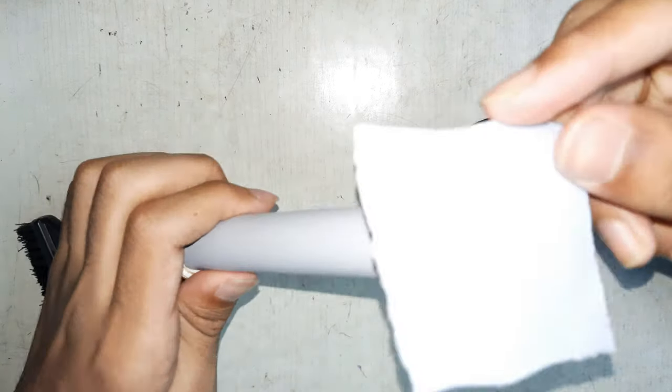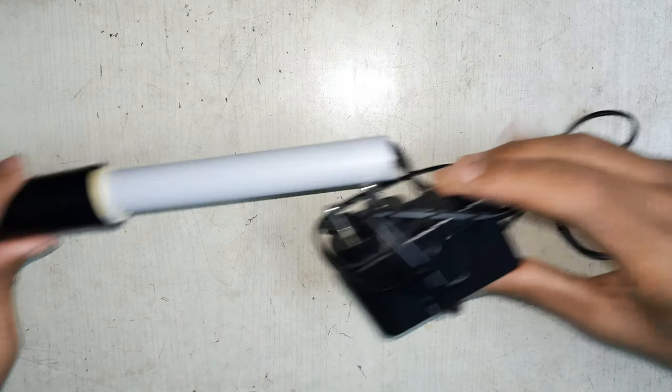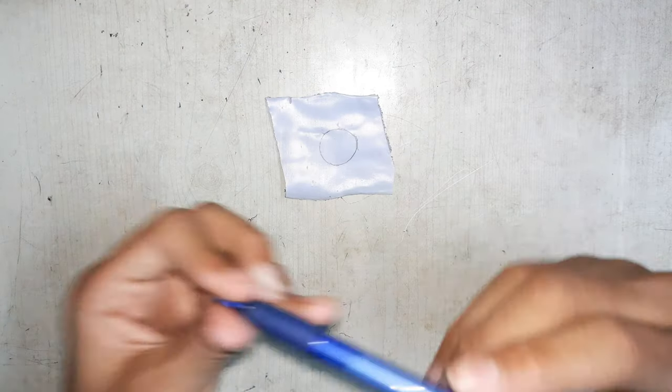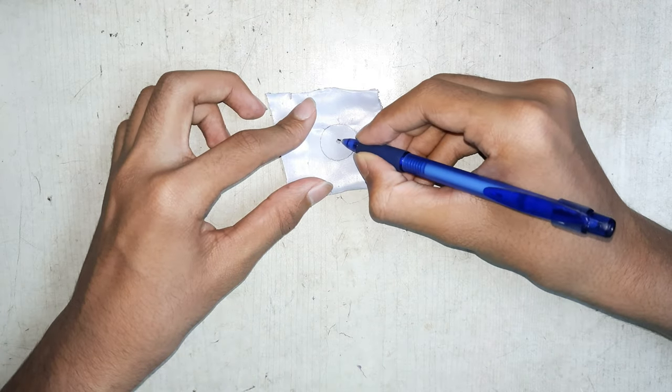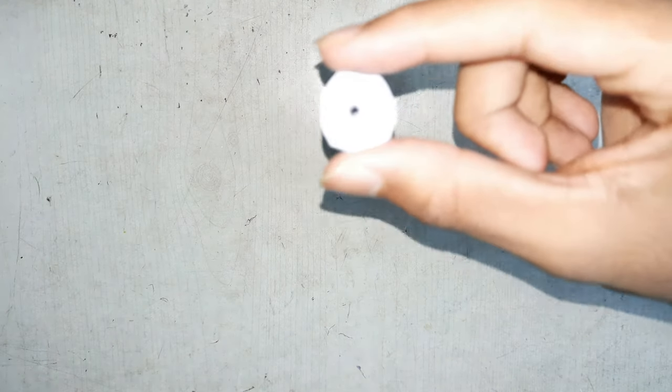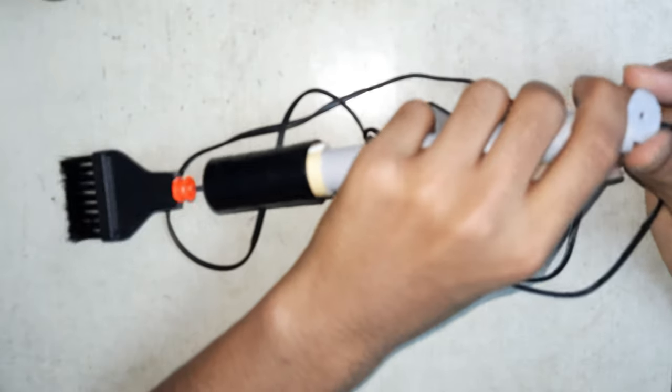Take a PVC sheet to cover the back side of the pipe. Cut the PVC sheet according to the pipe size. Make a hole in the middle of the sheet to take out the wires. Cut the circle, now stick it to the back side of the PVC pipe.